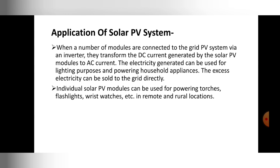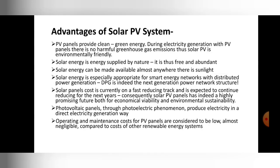The second application of the solar PV system is that individual solar PV modules can be used for powering torches, flashlights, wristwatches, and similar devices, and also in remote and rural locations. So those are some of the applications where the solar PV system is used.